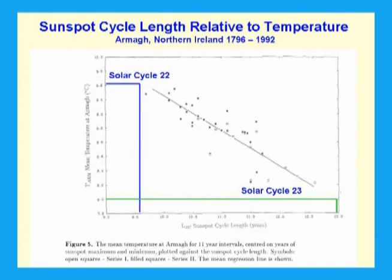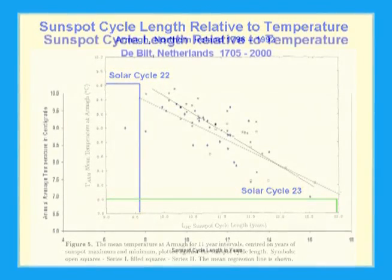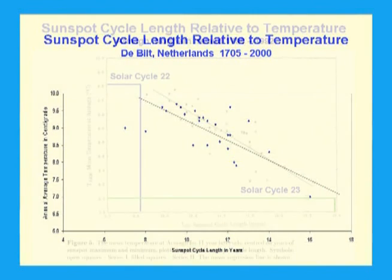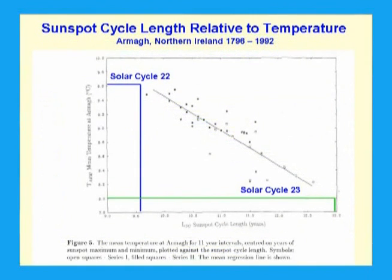Now let's assume that the relationship demonstrated in nearly 200 years of Armagh data and 300 years of De Bilt data is valid today. I have plotted on the top of this original figure solar cycle 22, which was 9.6 years long.